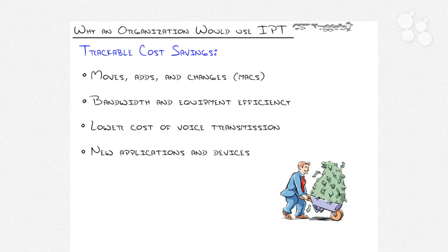Bandwidth and equipment efficiency: in the PBX world, every phone call takes 64 kilobits per second. A T1 line divides into 24 DS0 channels, meaning with a CAS flavor of T1 you can get 24 calls across it. In the IP telephony world, we can compress the voice — smoosh it down with very little quality degradation — so a call ends up taking somewhere between 12 and 24 kilobits per second depending on the optimization techniques used. You can send more calls across less bandwidth.